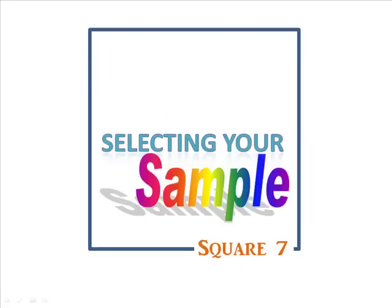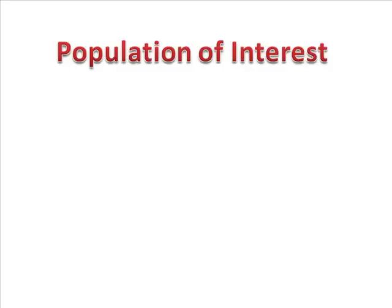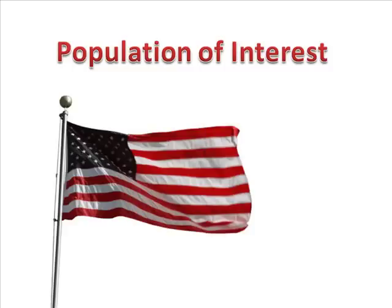At square seven, you're ready to choose people for your study. Let's assume your population of interest is American adults. But getting to everyone in the U.S. is too big a project, so you decide to select a sample from the population pool.